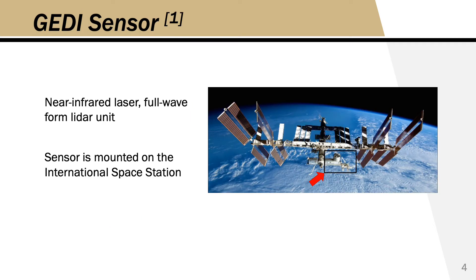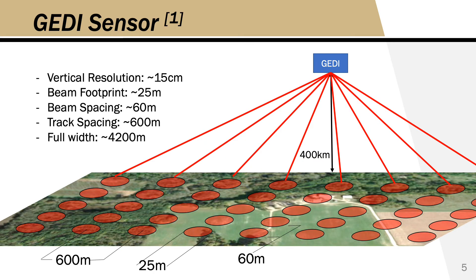Let's look at the first sensor. GEDI is mounted to the International Space Station and it uses full waveform LIDAR technology. The space station flies about 400 kilometers above the surface. This gives each beam a 25-meter diameter footprint on the ground and a long-track return spacing of about 60 meters. GEDI's eight beams cover a swath 4.2 kilometers wide, so clearly the sensor is designed for large area coverage.